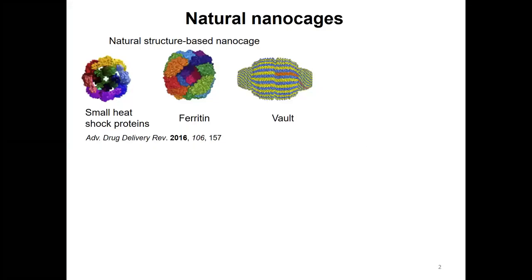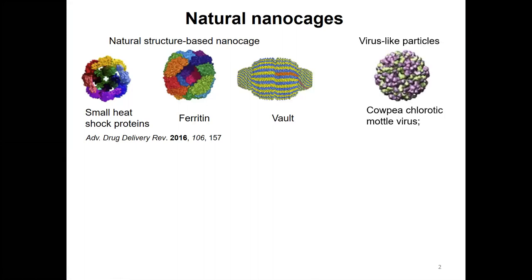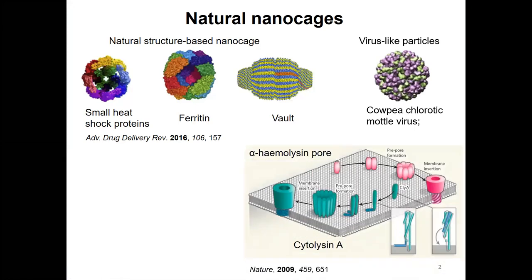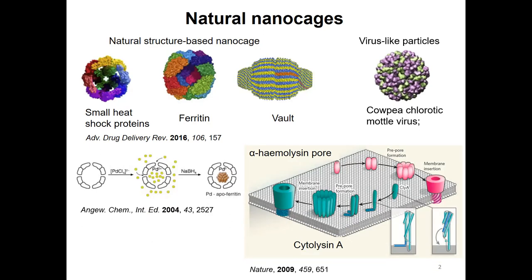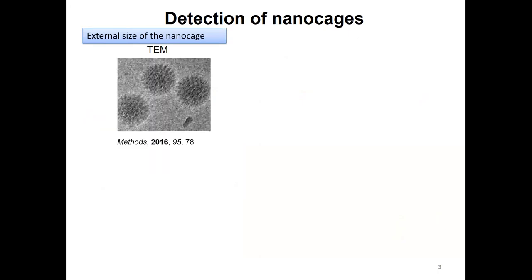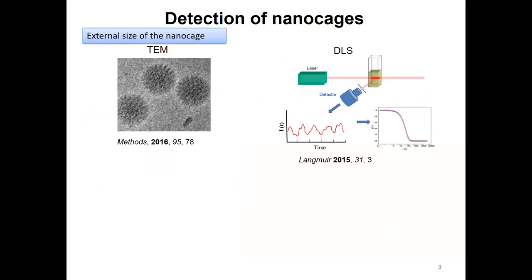Nanocages are quite common. We can find them from natural proteins, or virus-like particles, or even toxic nanoparticles. People have used nanocages as special containers to prepare nanoparticles. How do we understand the nanocage? You can get it from TEM images, or do it by dynamic light scattering. However, they can only tell us the external size of the nanocage.